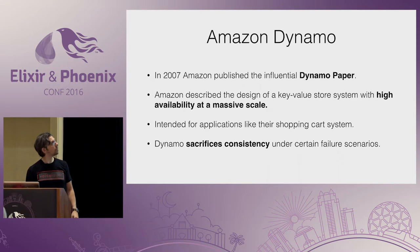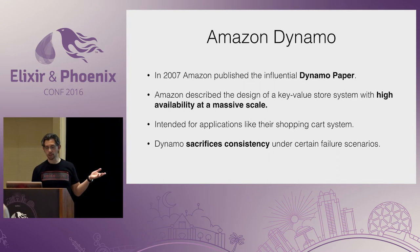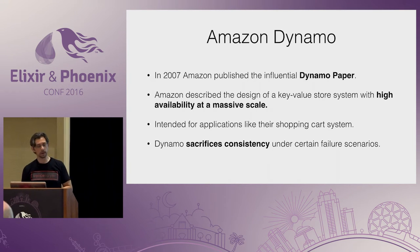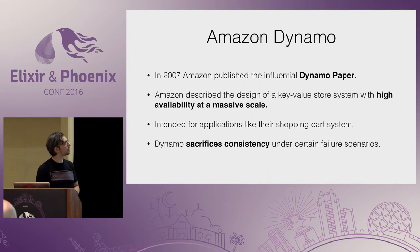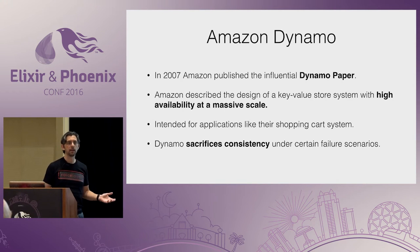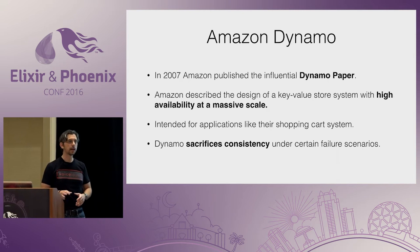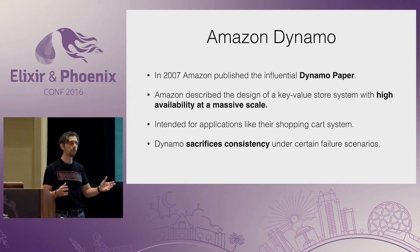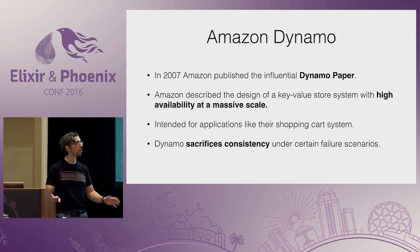Let's discuss Amazon Dynamo. In 2007, Amazon published a paper describing the design of a key-value store system with high availability at massive scale — thousands of nodes that can keep operating in the presence of hardware, software, and network failures. This paper led to the implementation of a new generation of database systems like Riak and Cassandra.